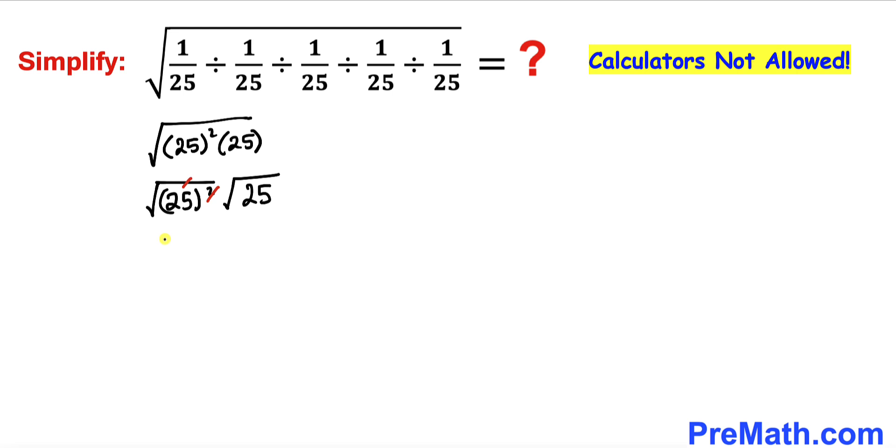Therefore we are just ended up with 25, and then this thing is simply 5. If we multiply this, that is going to give us simply 125.